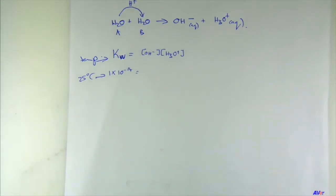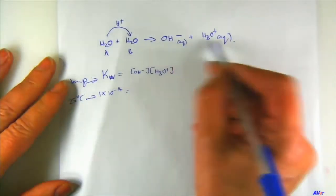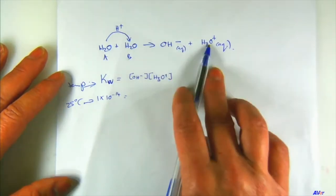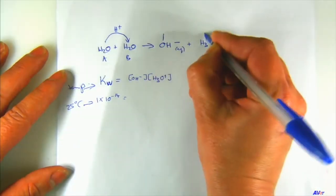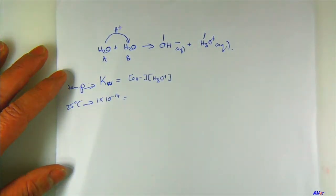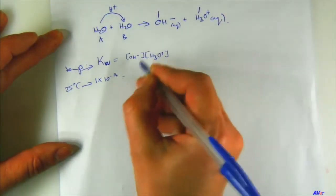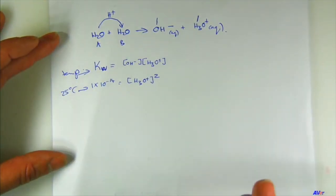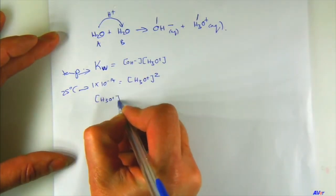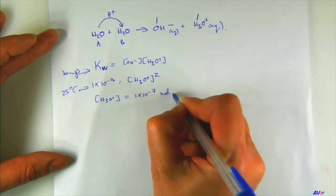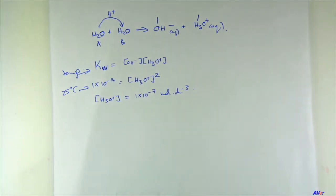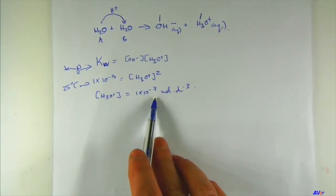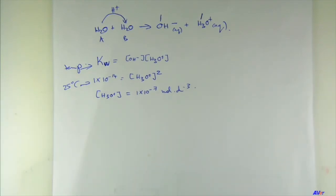In pure water, no one else has added OH⁻ or H₃O⁺, so they must be equal: one OH⁻ for every H₃O⁺. That means [H₃O⁺]² = 1 × 10⁻¹⁴, so [H₃O⁺] = 1 × 10⁻⁷ mol/dm³. The concentration of H₃O⁺ ions in pure water is 1 × 10⁻⁷ mol/dm³ — a very small number.